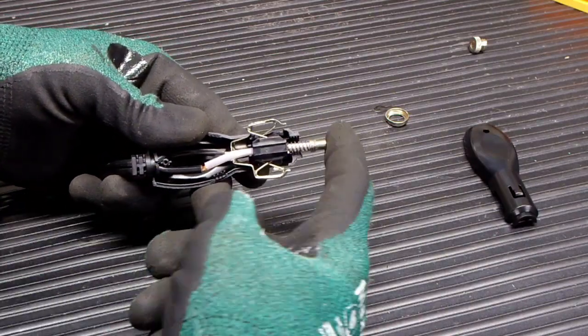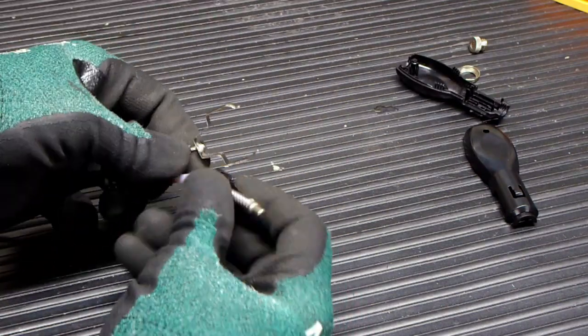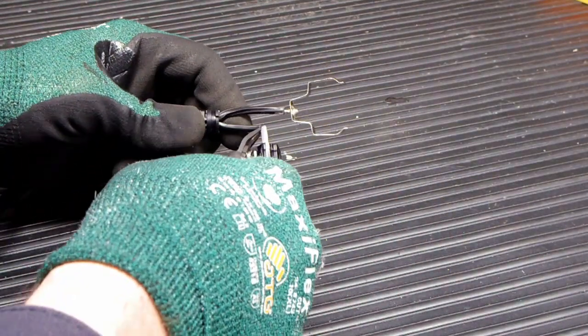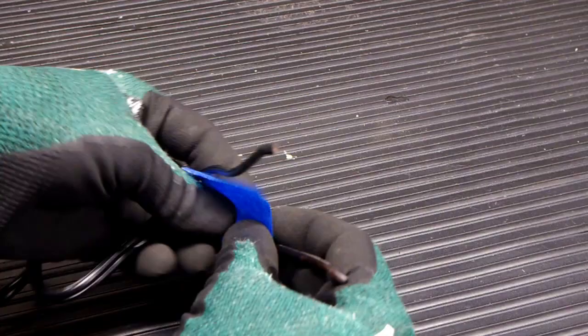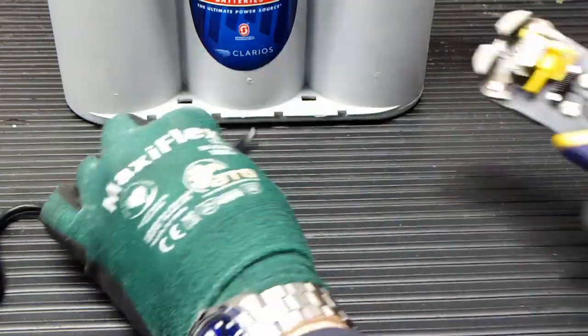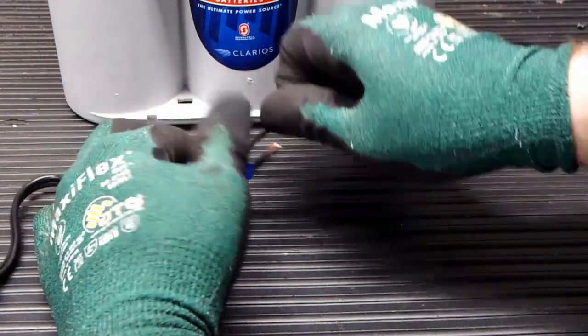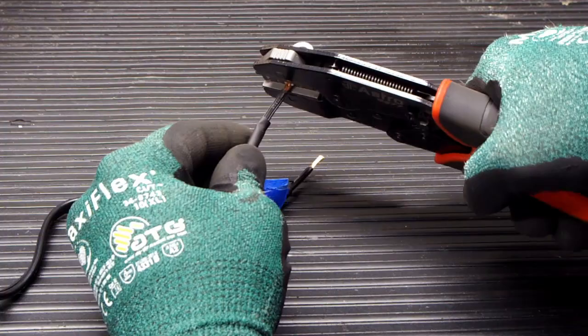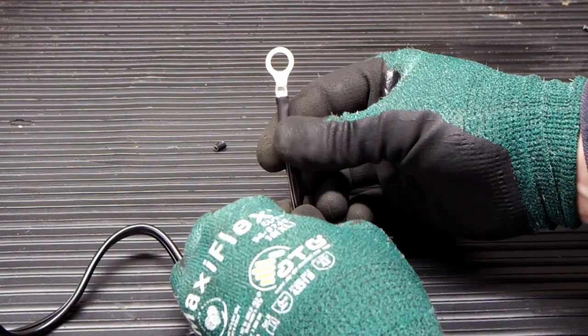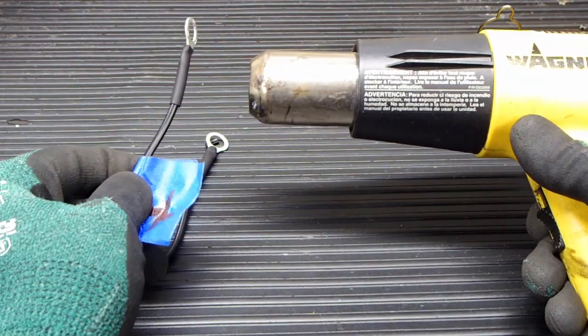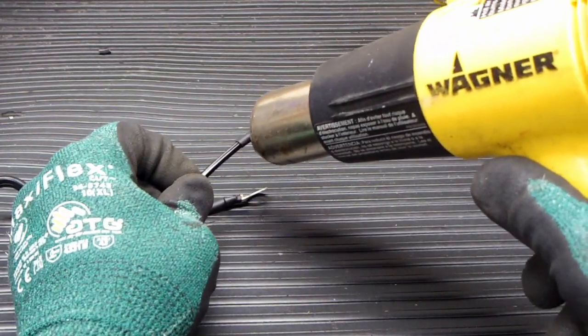To connect the inverter, we need to install some ring terminals. Take the plug apart and take note of the polarity. The center plug will be positive and the side contacts are ground. Cut the old contacts off and mark the positive wire. Strip the wires, slide on some heat shrink, and terminate the wires. Now we can connect the inverter to the battery.